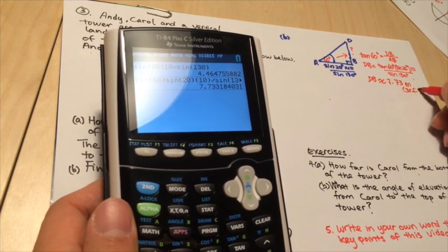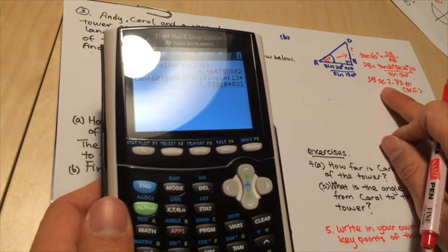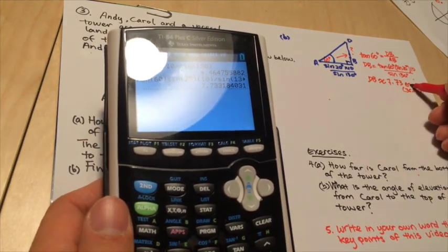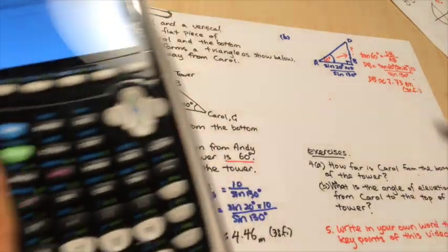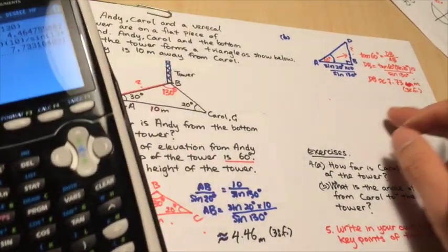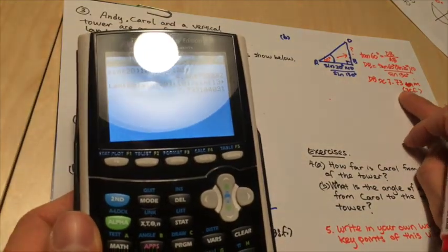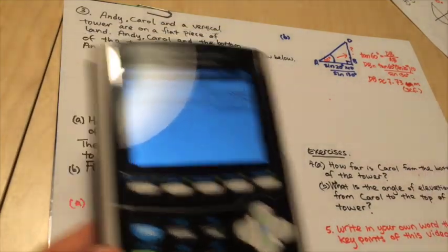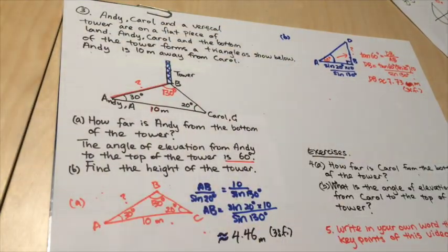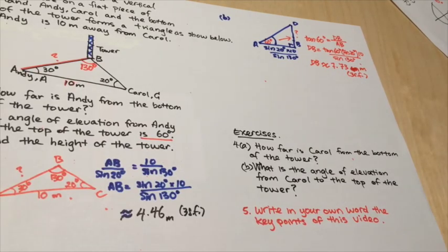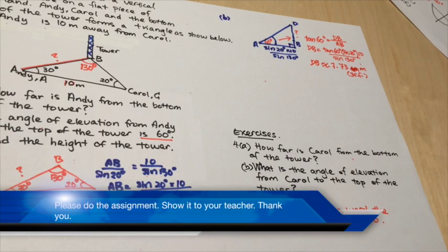Right. And because it's approximation, use the approximation sign and always identify the unit that is being used in the questions. And if it's three significant figures, use the bracket 3SF. Right. So that's the answer for 4 and 5. Please copy question number 4 and 5 into your notebook and attempt this question and then show it to your teacher the next day. Thank you very much.